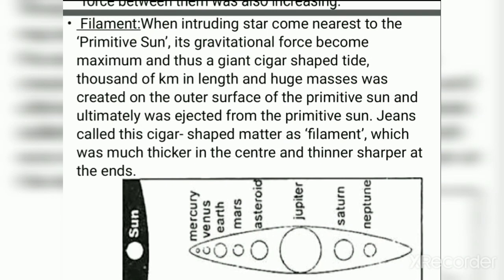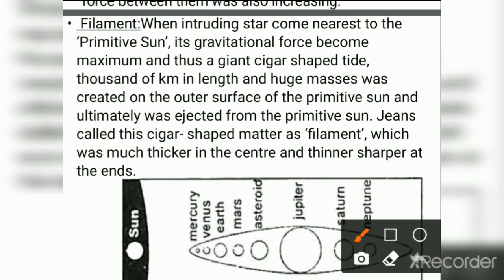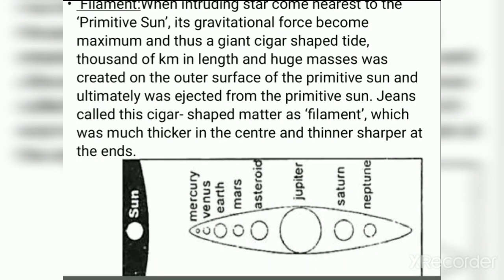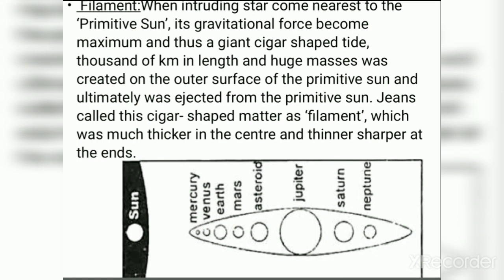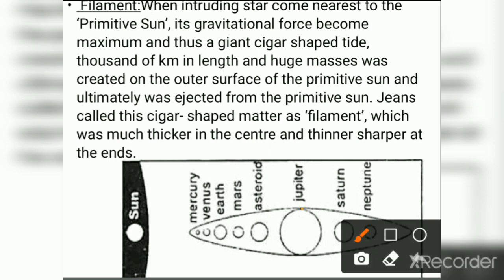A giant cigar-shaped tide of thousands of kilometers in length and huge mass was created on the outer surface of the primitive Sun and was ultimately ejected from it. Jeans called this cigar-shaped matter a filament, which was thicker in the center and thin at the ends. In the figure, you can see the same cigar-shaped filament, which is thicker at the center and thinner at the tapering ends.